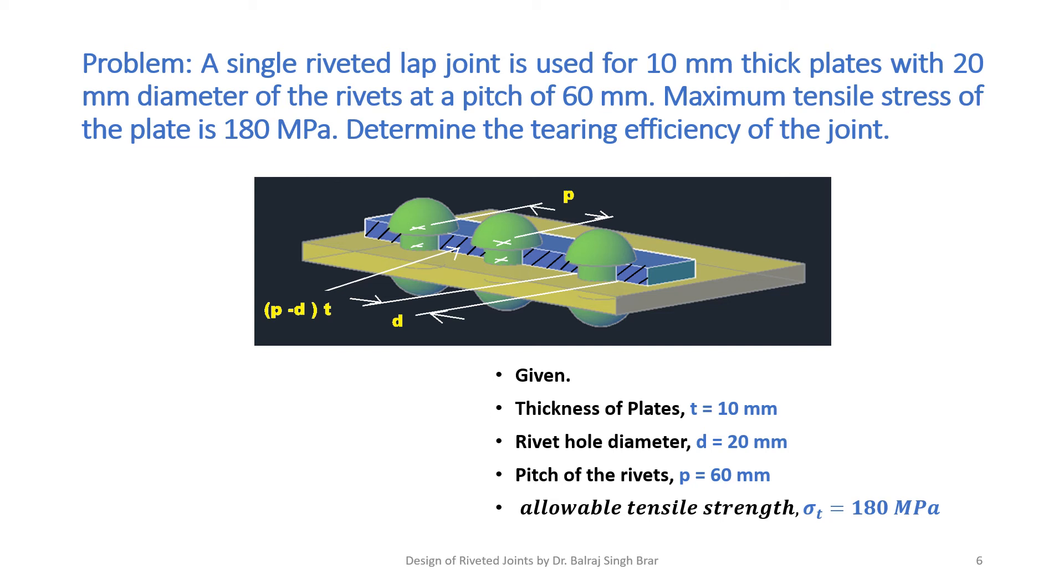Coming to a problem: Let a single riveted lap joint be used for 10 mm thickness plates with 20 mm diameter of rivets and pitch of 60 mm. Maximum tensile strength of the plates is 180 MPa. Determine the tearing efficiency of the joint.